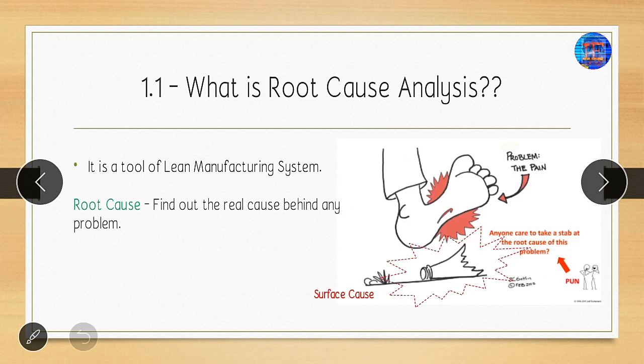Root cause analysis is a tool of the lean manufacturing system. The root cause is the real cause behind any problem — it is not the surface cause. For example, as shown in the picture, the problem is pain. Everybody might think the root cause is a broken piece of a bottle, but that is only the surface cause.